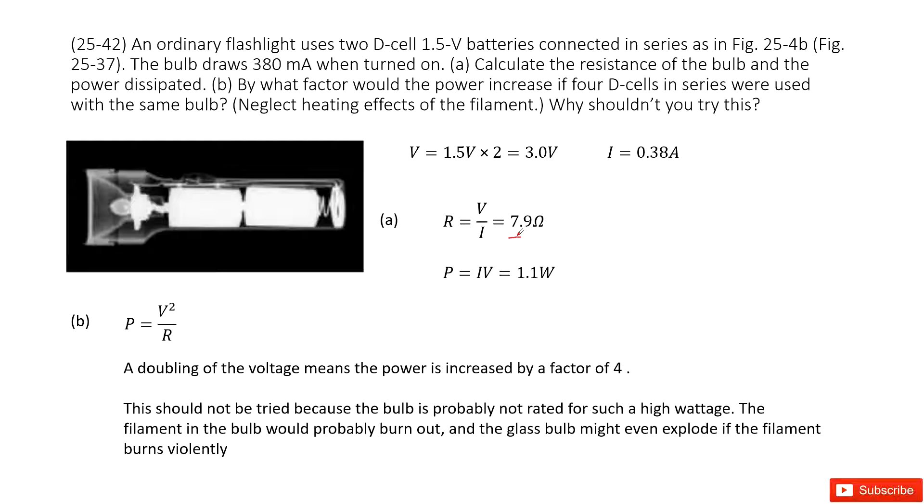Now we can see the second question asks you by what factor would the power increase if there are four batteries in series. So now we can see the keyword is four batteries, initially two batteries. That means the voltage increased twice, becomes twice. The final voltage is twice as the initial voltage.